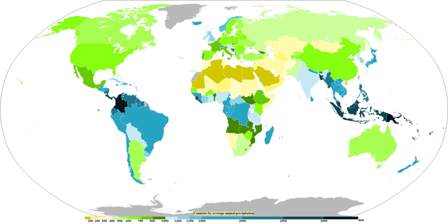The wet season is a time when air quality improves, freshwater quality improves, and vegetation grows significantly, though soil nutrients diminish and erosion increases. The previous dry season leads to food shortages into the wet season, as crops have yet to mature. Developing countries have noted that their populations show seasonal weight fluctuations due to food shortages before the first harvest. Tropical cyclones consist of large air masses with low pressure at the center and inward-blowing winds. Although cyclones can take an enormous toll in lives and property, they may bring much-needed precipitation to otherwise dry regions — areas in their path can receive a year's worth of rainfall from a single cyclone passage.